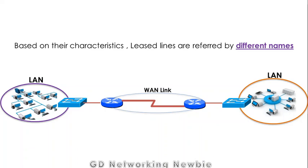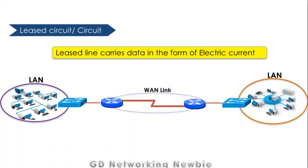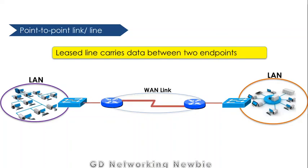Based on their characteristics, leased lines are referred to by different names. First, they are known as a leased circuit, because leased lines carry data in the form of electric current. Second, they are called a point-to-point link, because the leased line carries data between two end points — so two end points are connected with each other, which is why we call it a point-to-point link.